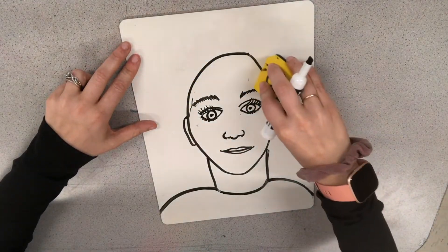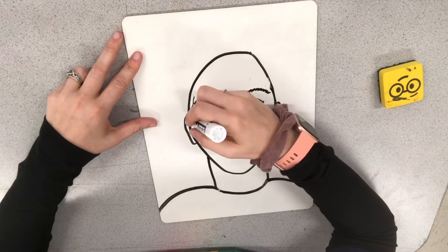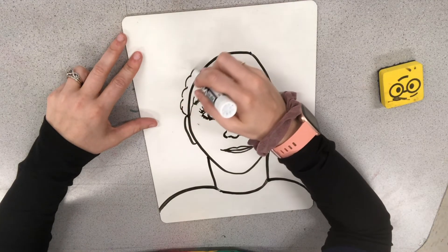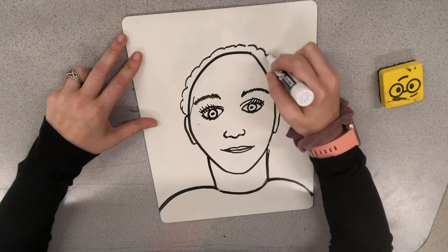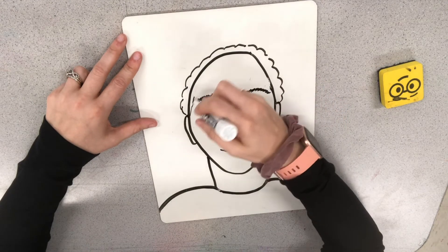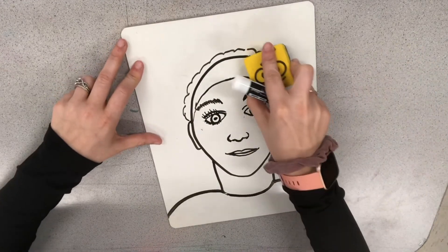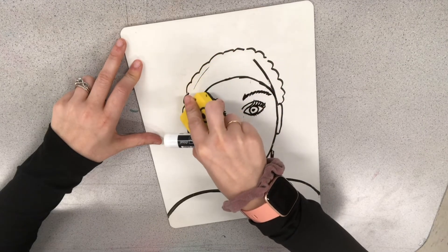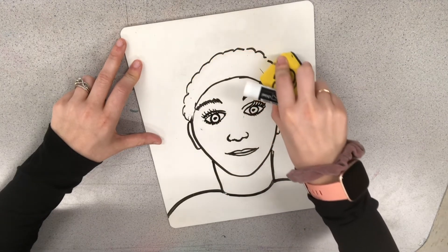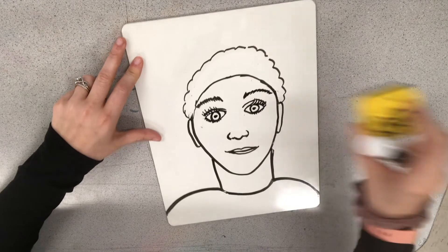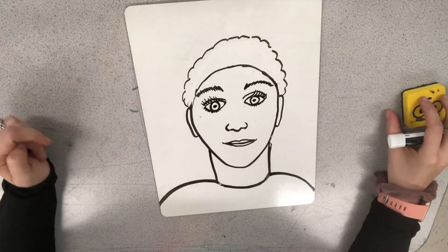Maybe your person has curly straight hair. So we can kind of add like a wavy line to the top of the head. You can add in some hair on the forehead. And then we would erase the line of the head that we had previously drawn. So that adds in some curly hair.